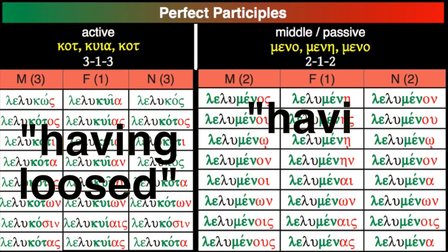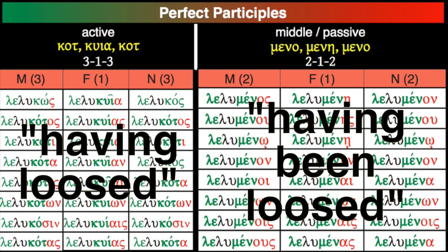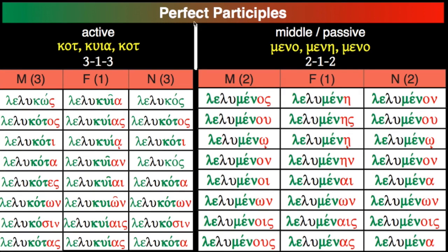Here are the perfect participles. Perfect participles: tense and voice, case, number, and gender. How do we recognize the tense? Look at all of these — you see reduplication everywhere. That's easy when words start with consonants. If they started with a vowel you'd have vocalic reduplications that look more like augments. And then we have kappas everywhere in the active. In the middle-passive, notice there is no connecting vowel — λελυμένος, not λελυομένος. The μέν is just tacked right on.